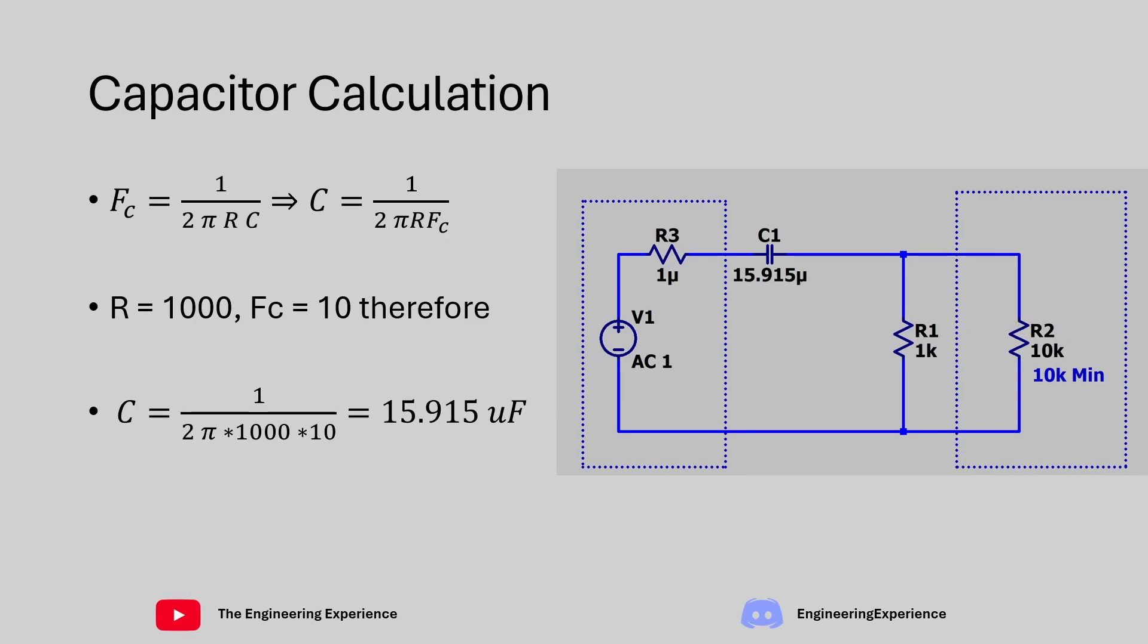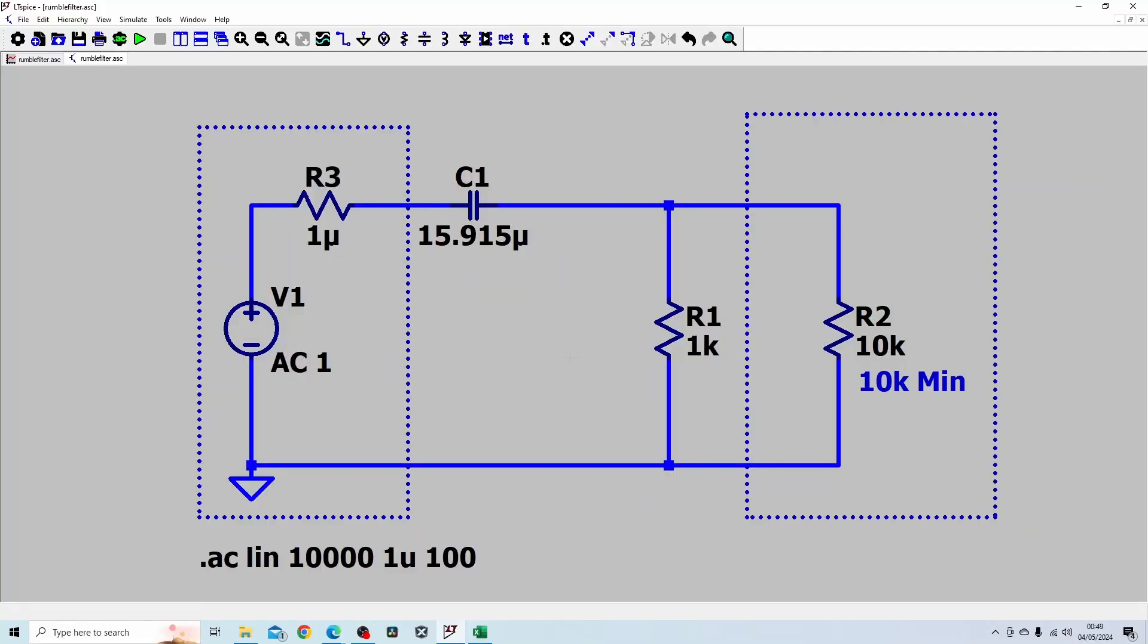Let's now have a quick look at how this filter behaves in simulation. This is the setup in LTSpice. I'm doing an AC analysis set as linear with 10,000 points starting from 1 microhertz up to 100 hertz. I've set the voltage source as AC 1 to make it work with this function. You can see I've set a very small value resistance for the source impedance and put down the minimum value for the load impedance. This is the filter we designed: a 15.915 microfarad capacitor and a parallel R1 which is 1000 ohms.